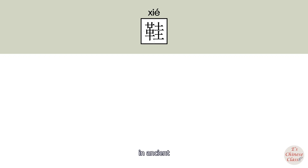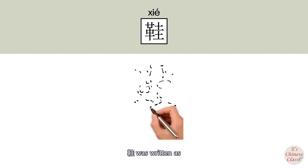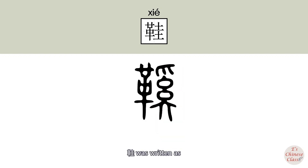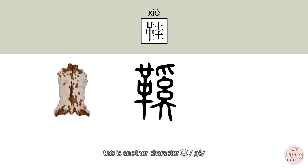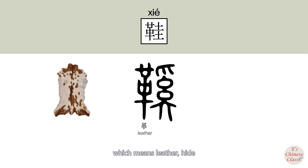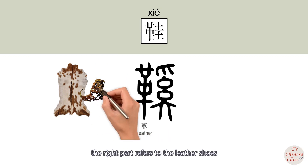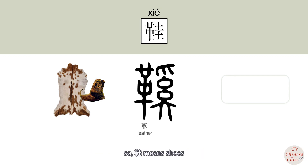In ancient script, 鞋 was written with the left part referring to an animal skin — this is another character, 革, which means leather — and the right part referring to height. The right part refers to leather shoes. So 鞋 means shoes.